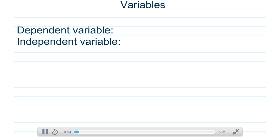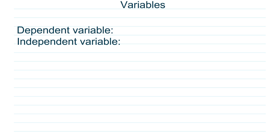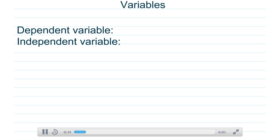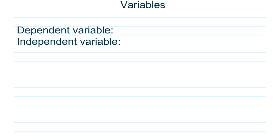Whenever a scientist is doing an experiment, you have to set it up correctly. The easy way to do that is to, before you start, figure out what you're looking for — so what you're going to change and what you're going to measure. We call these things the dependent variable and independent variable. An easy way to define these is: the dependent variable is what the scientist is looking to measure.